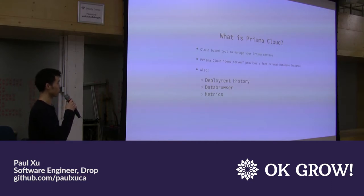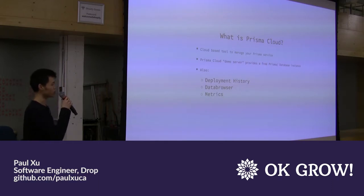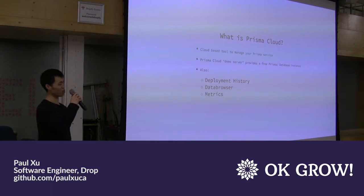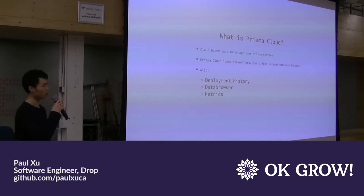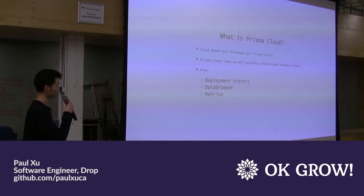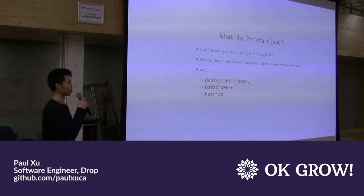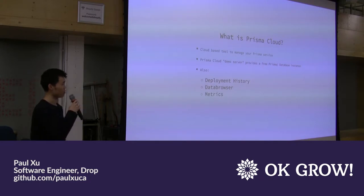Prisma Cloud also gives you deployment history, so if you're working on a team or alone, you can see how your schema has evolved over time and roll back if needed. It gives you a data browser where you can view, edit, and delete data in the web. And it provides metrics like server response times, most popular mutations in the past 24 hours, and field-level metrics on your Prisma service.